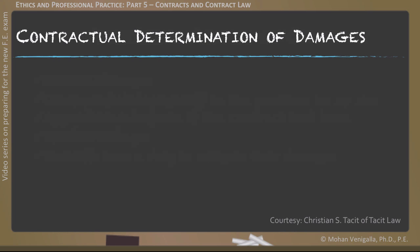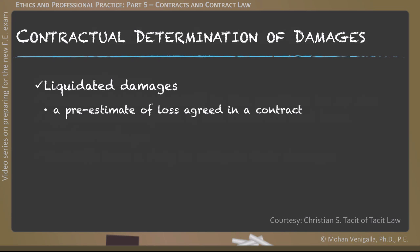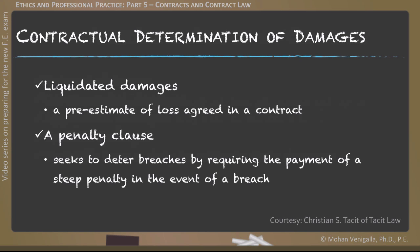There are two clauses in a contract that determine the damages resulting from a breach. The first is the liquidated damages clause — a pre-estimate of loss agreed in a contract if a breach occurs. The second is a penalty clause, which seeks to deter breaches by requiring the payment of a steep penalty in the event of a breach.